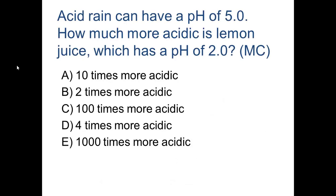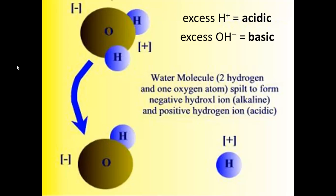A little quiz: acid rain can have a pH of 5.0. How much more acidic is lemon juice, which has a pH of 2.0? Multiple choice — go ahead and pause and choose your answer. If you said E, a thousand times more acidic, you were correct.